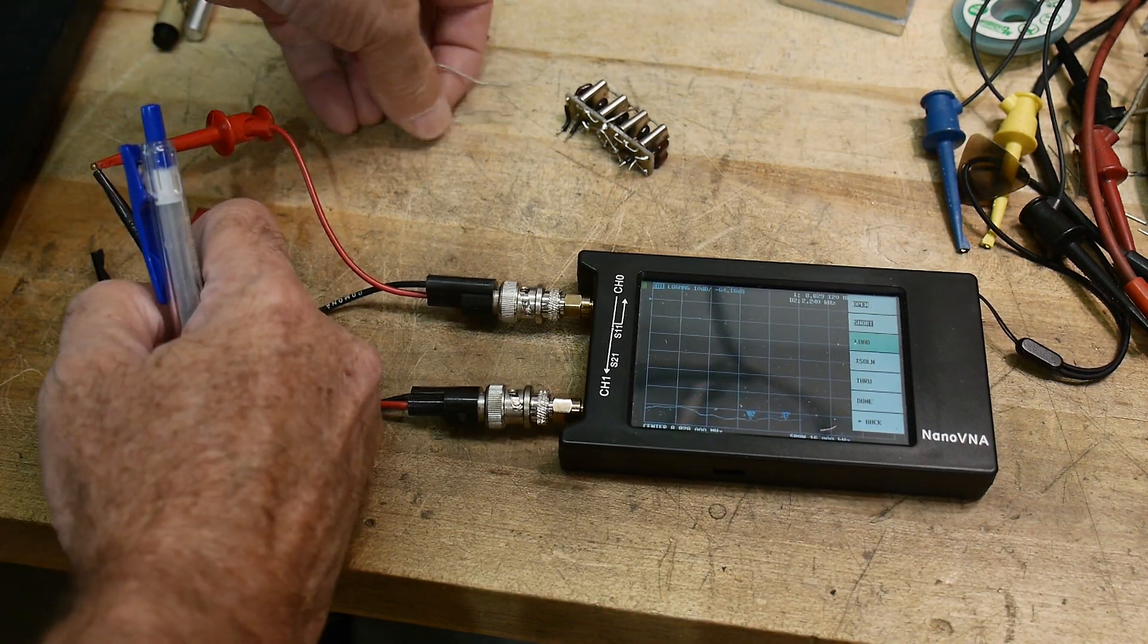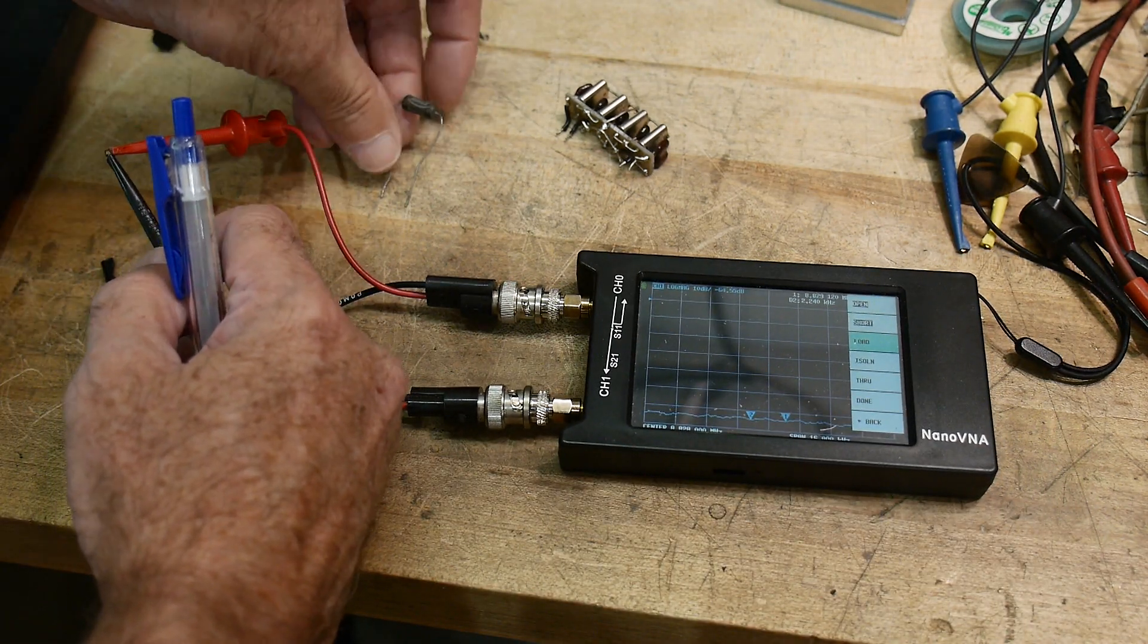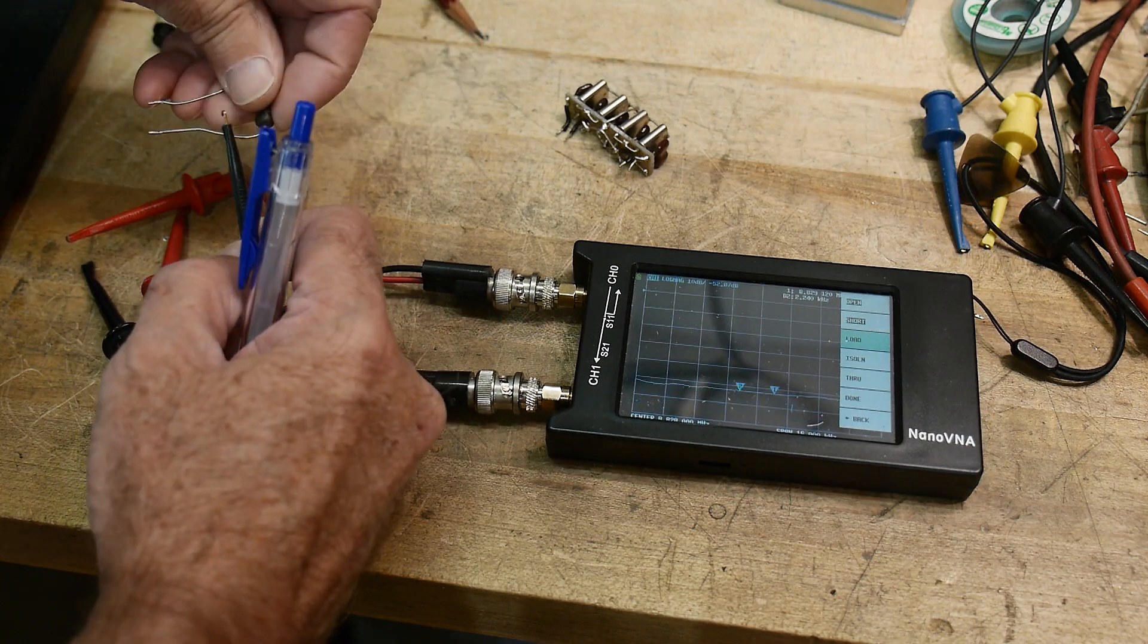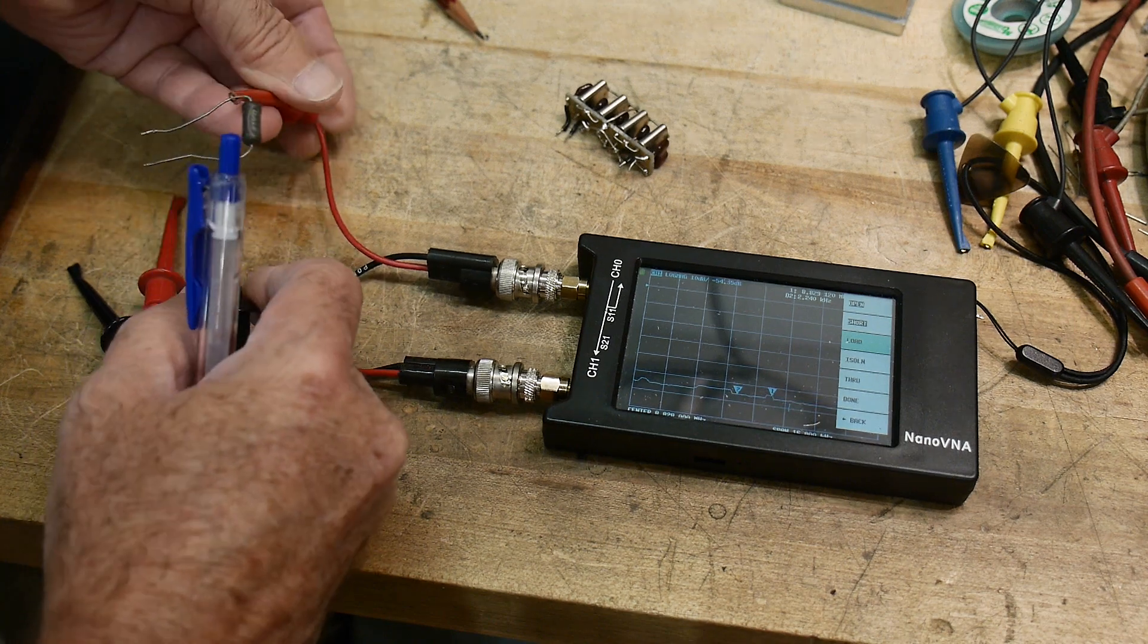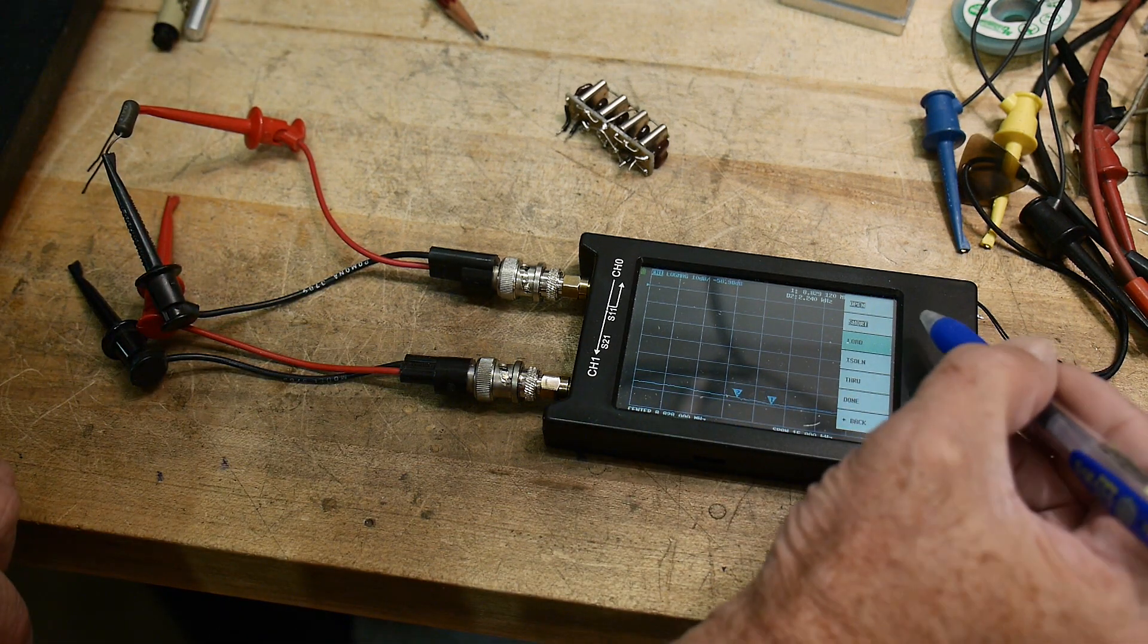Oh, now I need to load. Here's a 50 ohm resistor. I'll use my 50 ohm resistor as a load. Clip that on there. Say load.